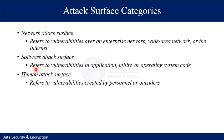Software attack surface refers to application vulnerabilities such as utility programs or operating system code running on a server, with a particular focus on web server software. Another kind — human attack surface — refers to vulnerabilities created by personnel or outsiders, achieved through social engineering, human error, or a trusted insider providing information to an external user.